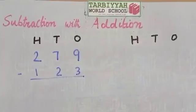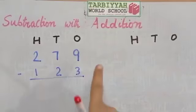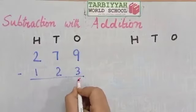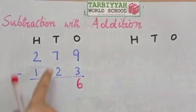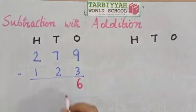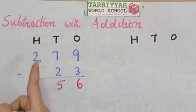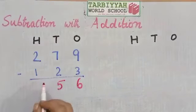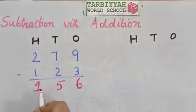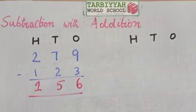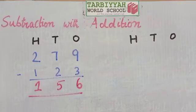Now we will verify subtraction using addition. First we subtract the numbers: 9 minus 3 is 6, 7 minus 2 is 5, and 2 minus 1 is 1. When both numbers match after adding back, that means the subtraction is correct.